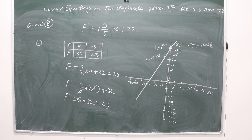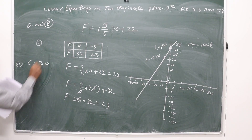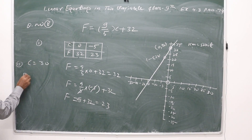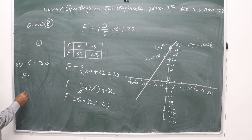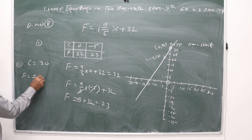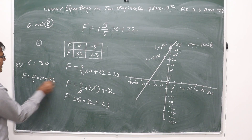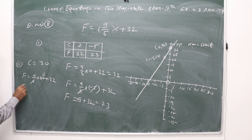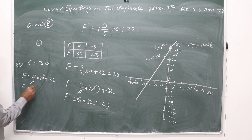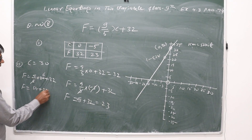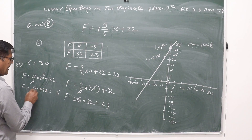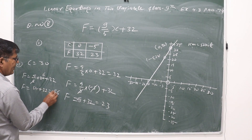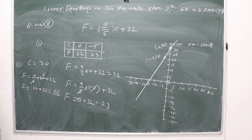Part two: if the temperature is 30 degrees Celsius, what is the temperature in Fahrenheit? Put C = 30 into the formula: F = 9/5 × 30 + 32. The 5 cancels with 30 giving 6, so F = 9 × 6 + 32 = 54 + 32 = 86 degrees Fahrenheit.